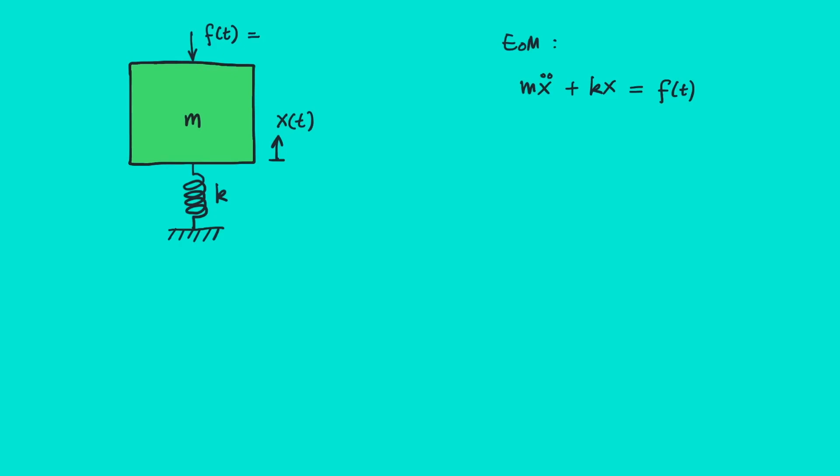So in this case we assume a simple harmonic motion where f can be defined as F sin(ωt), where F capital is the peak amplitude of the force.